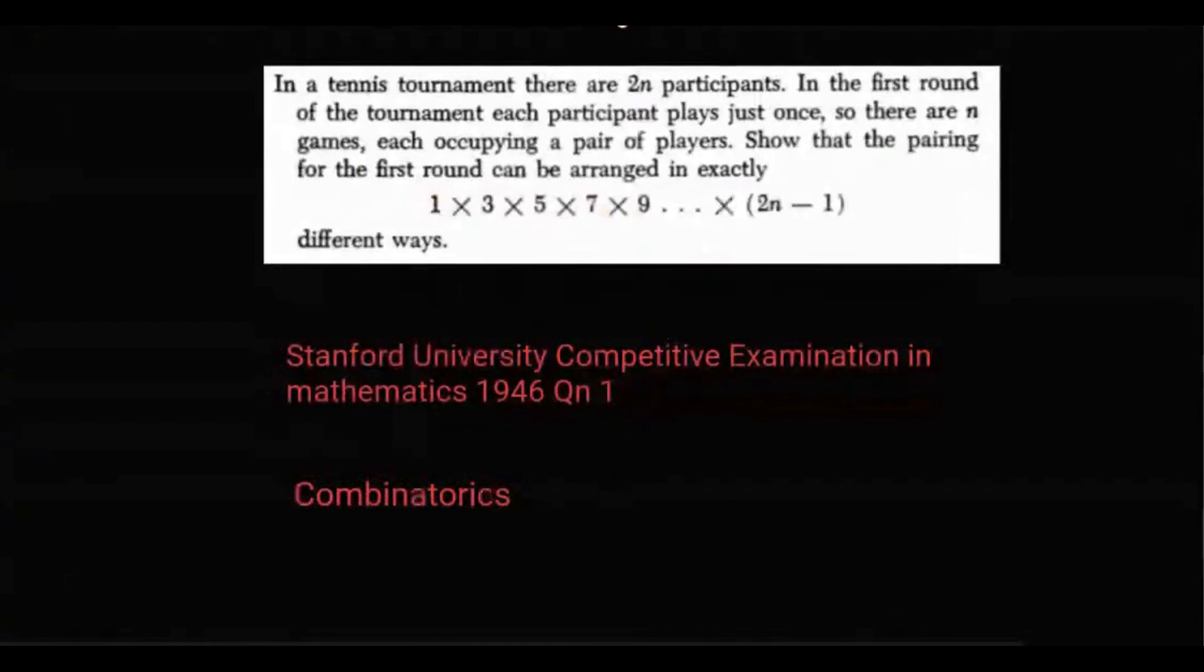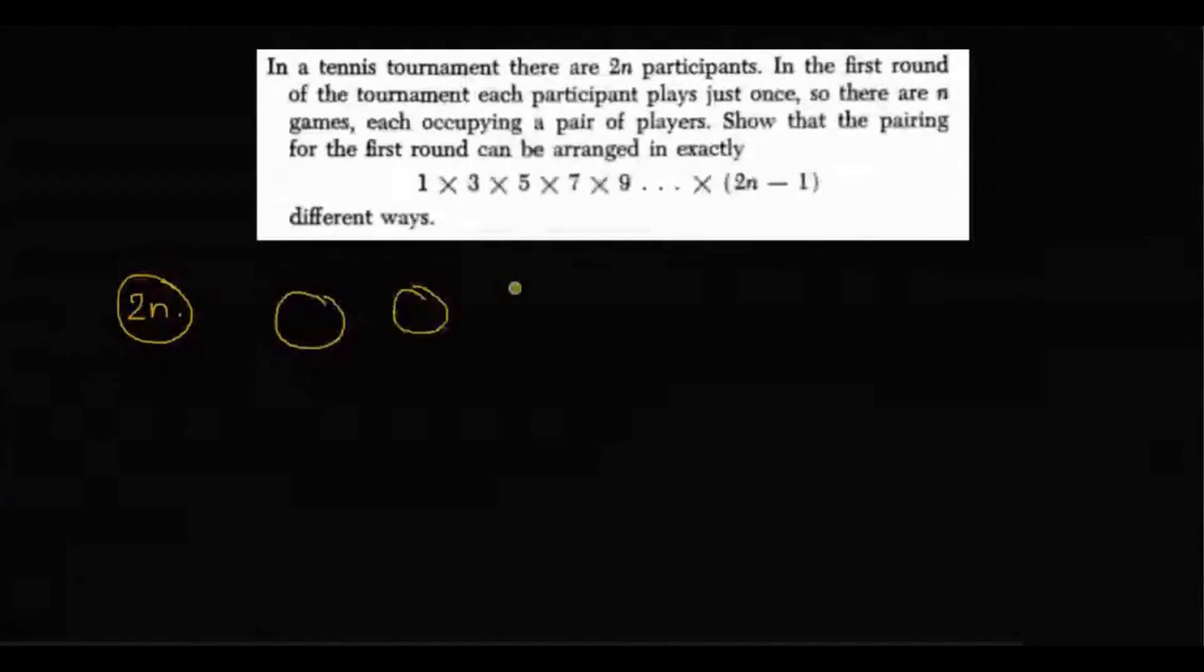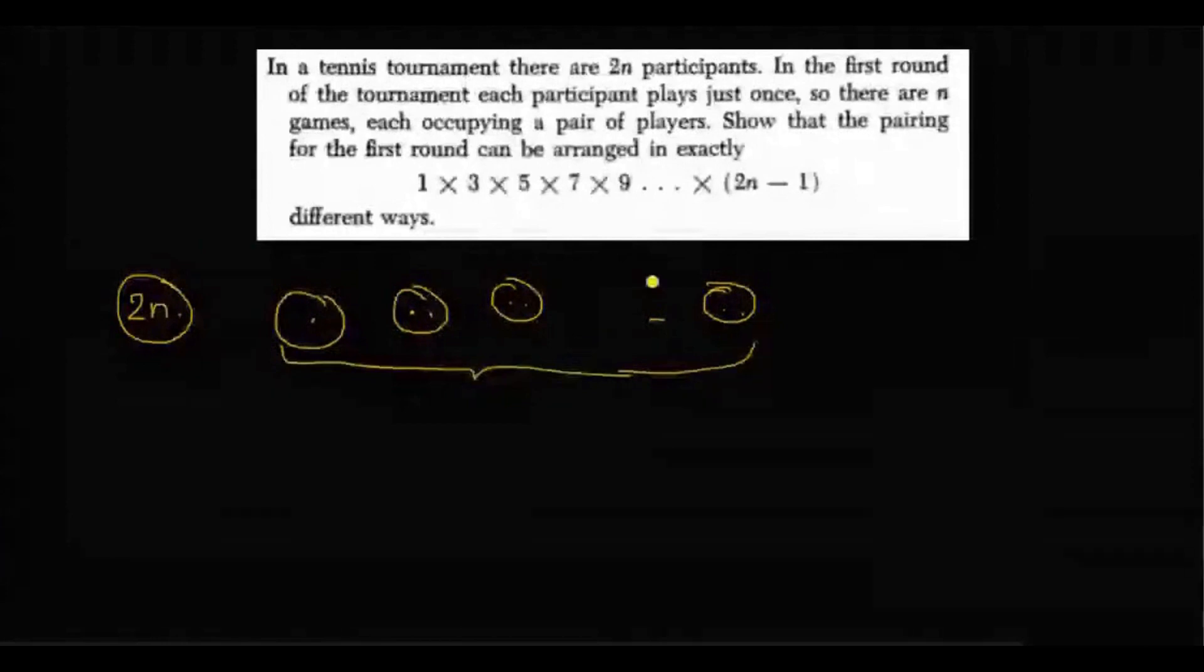Now let's understand the question. Suppose we have 2n many participants. Now we need to find the pairs. We need to find n many pairs. So that in each pair exactly two participants are there. So the number of ways this n number of pairings can be formed is to be determined. So we need to show that.